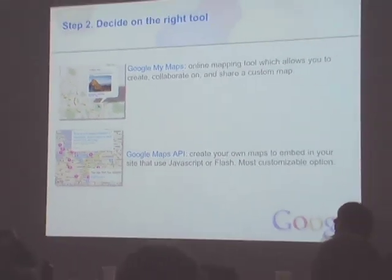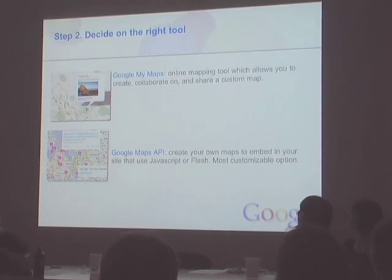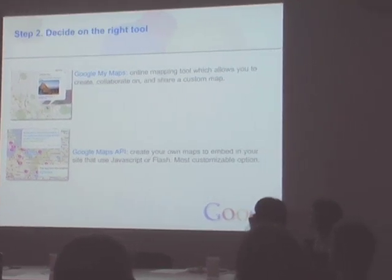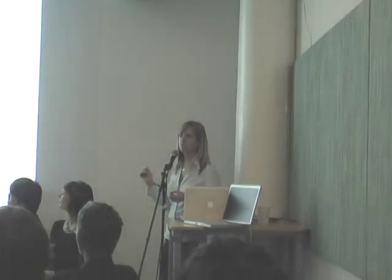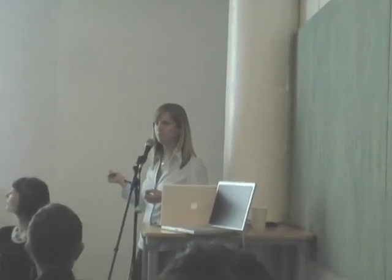I'm going to talk about a couple of the tools that are most important for interactive mapping. Probably the easiest and lowest-hanging fruit that everybody can do is Google My Maps — it's basically Google Maps that you can edit. Then there's the Google Maps API, which is a little more suited for developers, but it's the richest way to customize your own map.